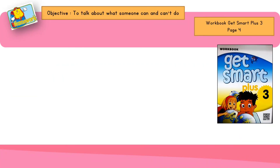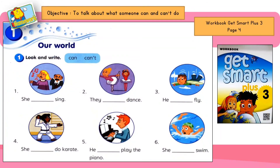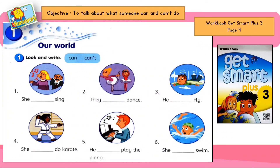Now let's do this homework. Please refer to workbook CatSmart Plus 3, page 4. Our topic is from Unit 1, Our World — look and write can or can't. Look at the picture carefully, then fill in the blank with can or can't.